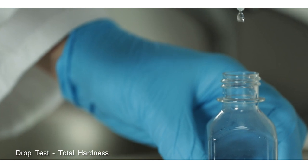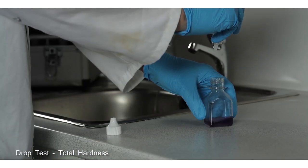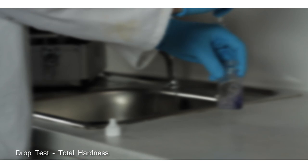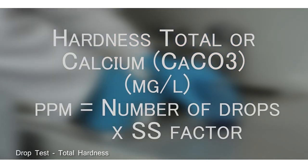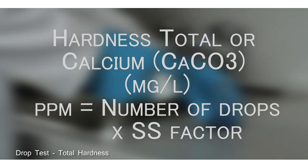Count the number of drops of your chosen titrant until the sample turns from red to blue. The number of drops times by the SS factor equals total hardness in milligrams per litre.